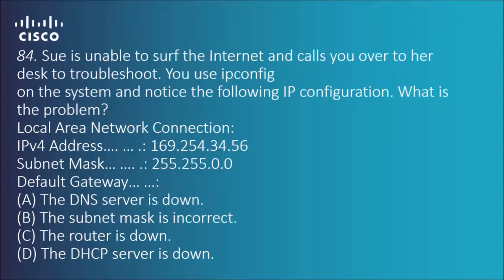This doesn't have too much to do with DNS, so we can rule that one out. The subnet mask being incorrect is tough to say. The router is down — I could nearly go for that because the default gateway doesn't show up, which is kind of weird. Or the DHCP server is down.